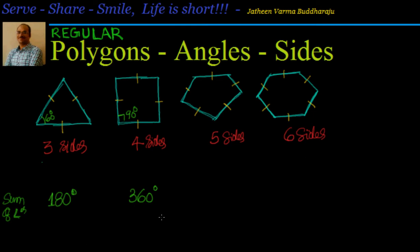Now how do we proceed for more sides? One pattern we notice: 180 plus 180 is 360, so it should be 360 plus 180 is 540, then 540 plus 180 is 720. We are saying this by intuition, but is there a way to prove it? Yes. For the 4-sided quadrilateral, I will divide it into 2 triangles. With 2 triangles, the sum of angles is 2 × 180.